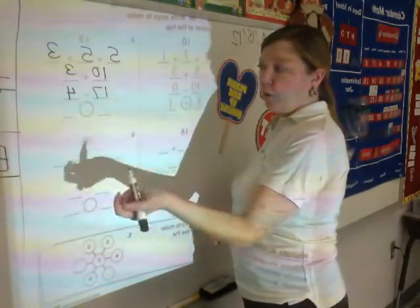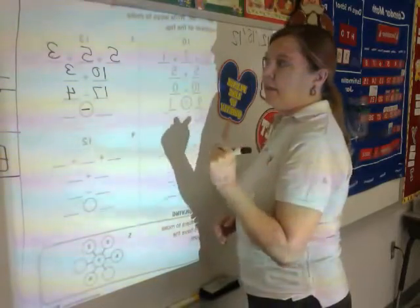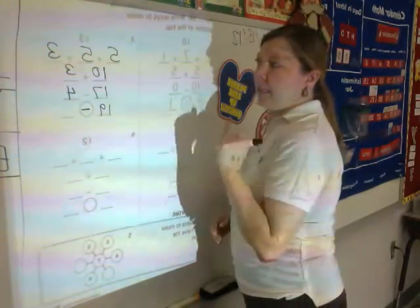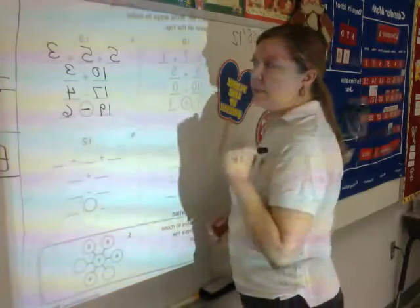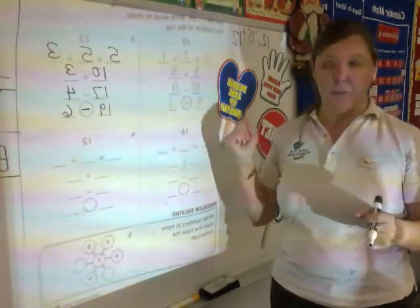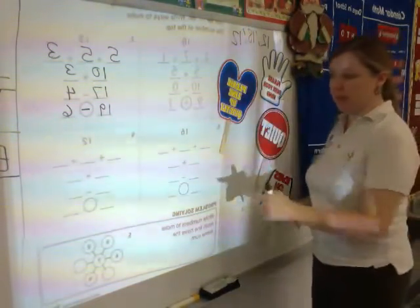And then here you can do your choice. I think I'll subtract again. This time I'm going to use nineteen. Nineteen minus six equals thirteen. Remember yours are not necessarily going to be like mine. There are many different numbers that you can use in these blanks.